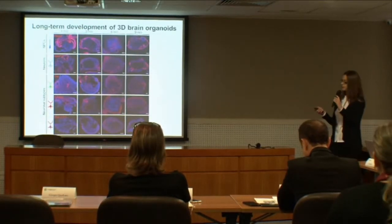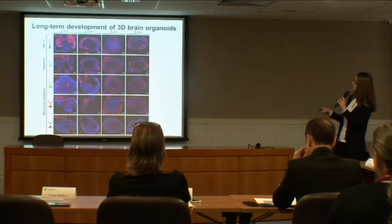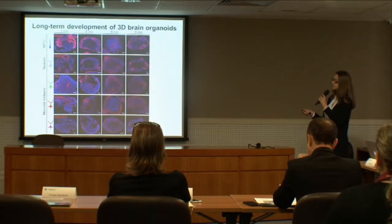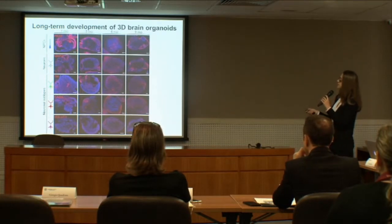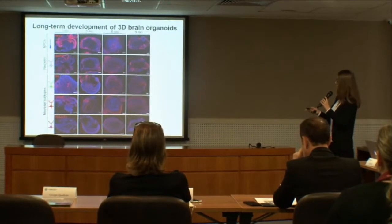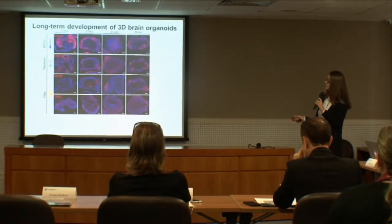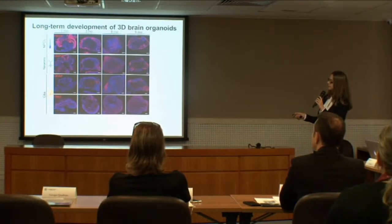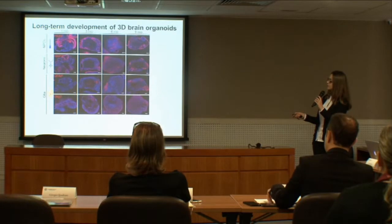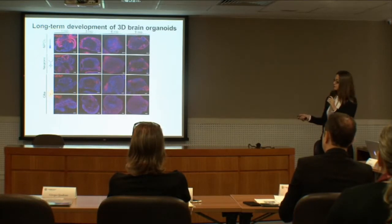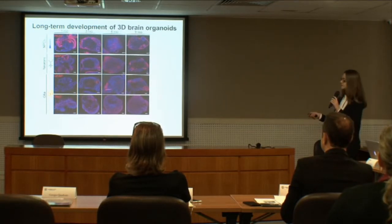We also characterized different stages of these organoids with immunofluorescence. Over time, organoids express different markers of progenitor cells such as PAX6, as well as markers of different neuronal subtypes. Over time, organoids also start to express markers of glial cells — at one month you don't really see expression of glial cell markers such as GFAP, but then over time expression appears. This mirrors what happens in the human fetal brain, since glial cells are generated later compared to neurons.